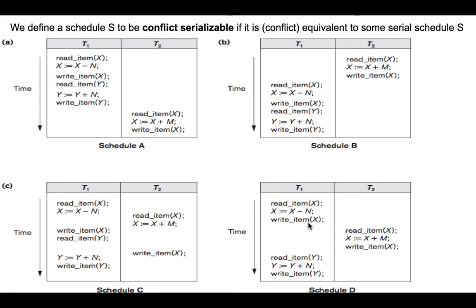In schedule D, the first conflicting operations are write X in T1 and read X in T2. They belong to different transactions, access the same data item, and one is a write. We check whether this occurs in the same order in schedule A: write X occurs first, then read X — yes, same order. So there is no issue here.